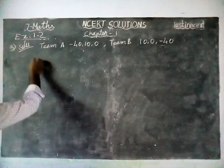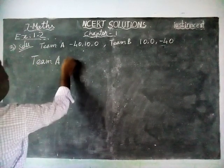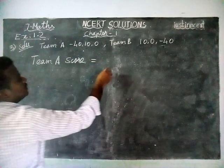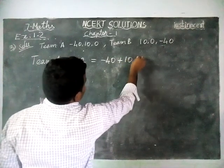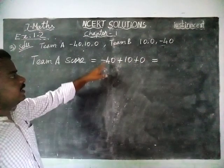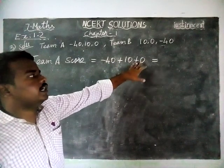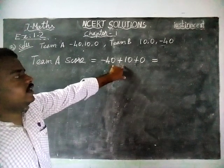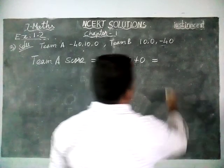First we have to find team A's score. Team A's score — we have to add all the integers: minus 40 plus 10 plus 0. Here this is a minus sign, this is a plus sign, and this is 0. Since the two signs are different, we have to find the difference.